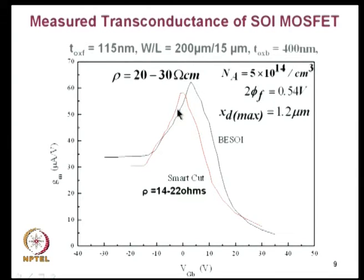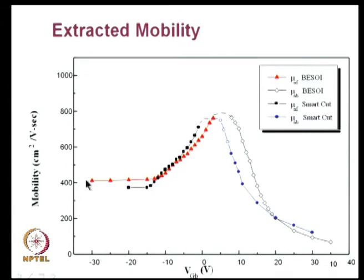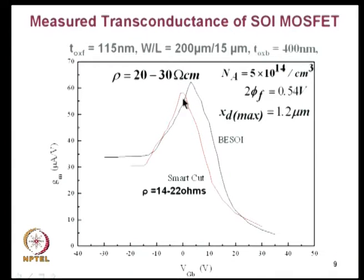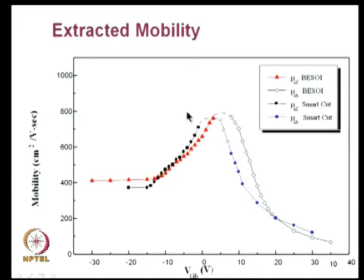The best transconductance and best current you get when both channels are inverted. From the transconductance you extract the mobility. Maximum transconductance corresponds to best mobility because when both channels are inverted, the transverse fields are small and mobilities are best.